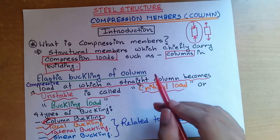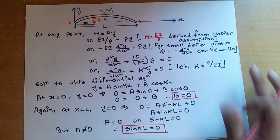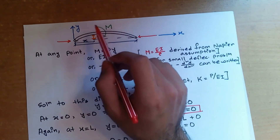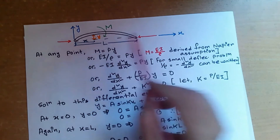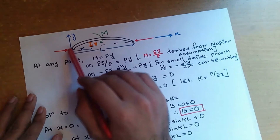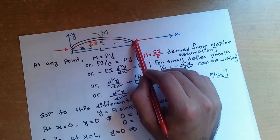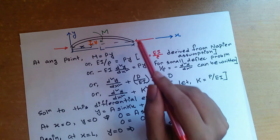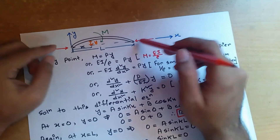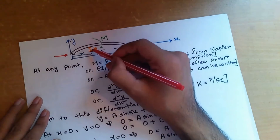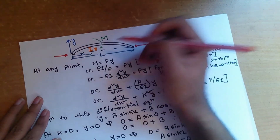Now let's see a derivation of the equation for finding the value of critical load for a pin-ended column. In the figure, this pin-ended column is in critical state — meaning it is not straight but has buckled or deflected a very slight amount. The column is in critical load condition, so it remains slightly in a buckled position.